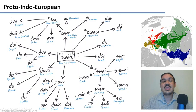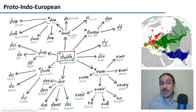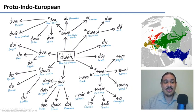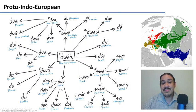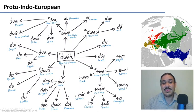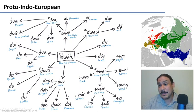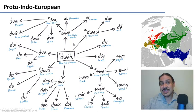Over time, because the people in Spain couldn't talk to the people in India, their languages started changing and diverging, eventually producing all this variety. This is a reconstructed Proto-Indo-European form for the word 'two,' probably pronounced something like 'dwoh.' As you can see, 'dwoh' became 'dva' in Russian, 'do' in Hindi, 'dos' in Spanish, and 'two' in English — all related, all beginning with sounds like d or t.